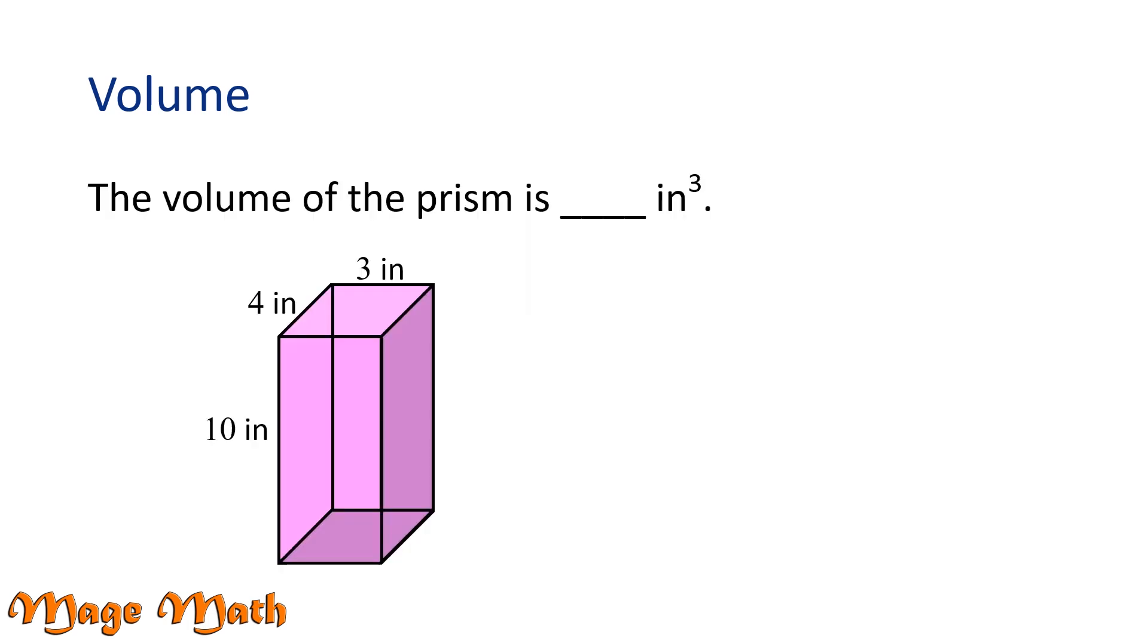The volume of the prism is blank inches cubed. The figure is called a rectangular prism because its base shape is a rectangle. In this example, there are two bases, one on top and one on bottom, with the dimensions of 3 inches by 4 inches. The rectangular prism has a height of 10 inches, which is made up of the tall skinny rectangles.